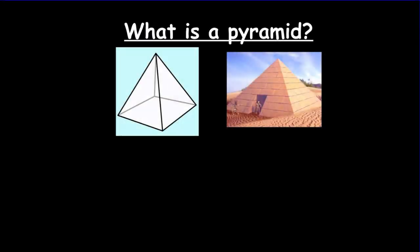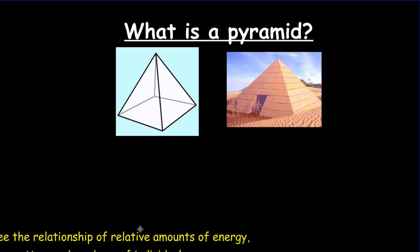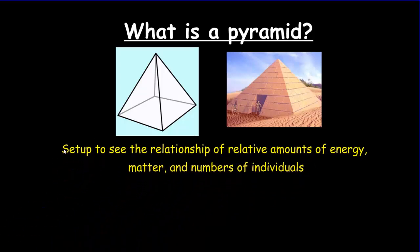The real power of trophic levels comes when we put them into pyramids, where we can show distinct and unique relationships within ecosystems. A pyramid has a wide base and a narrow top. The lower layer has a much greater volume than the top layer. We use trophic level pyramids to show the relative amounts of energy, matter, or numbers of individuals at each level.